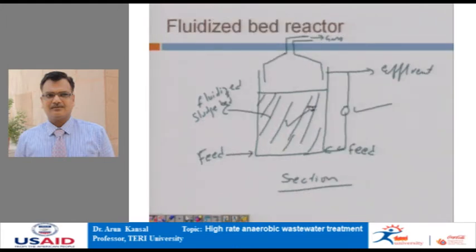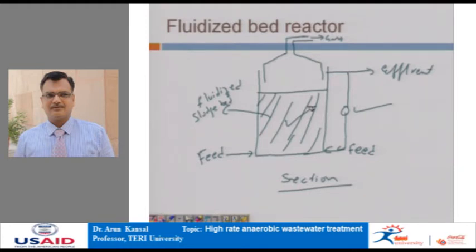Fluidized bed reactors have several advantages over anaerobic filters: they are less likely to clog, have lower hydraulic head loss combined with better hydraulic circulation, are able to operate at lower retention times and higher loading rates, and have a greater surface area per unit of reactor volume. The capital cost is lower due to reduced reactor volumes. However, recycling of effluent may be necessary to achieve bed expansion.